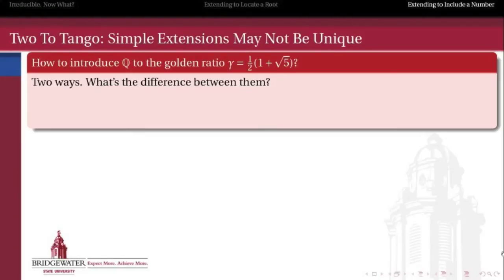But to finish, I want to muddy the waters just a little bit, because there is more than one way to create such an extension field. So we're going to look at how to extend the rational numbers to include the golden ratio. In the next video, we'll look at two different ways to introduce the rational numbers to the golden ratio — (1 + √5)/2 — and examine what the difference is between those two different approaches.